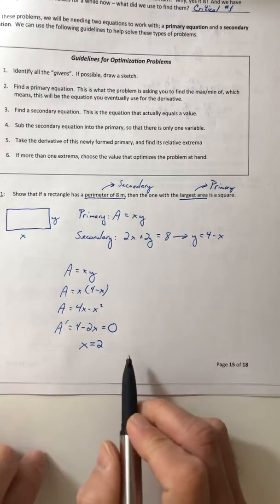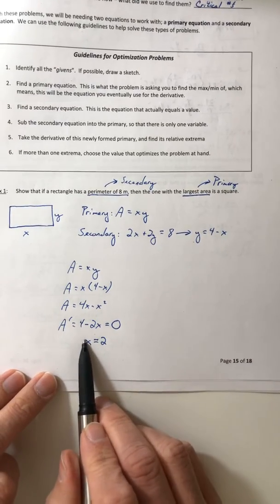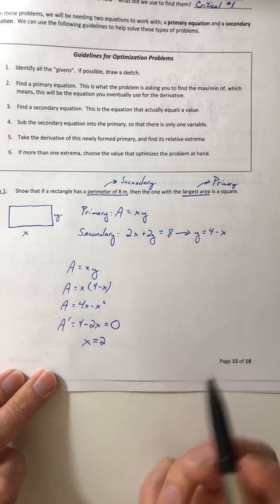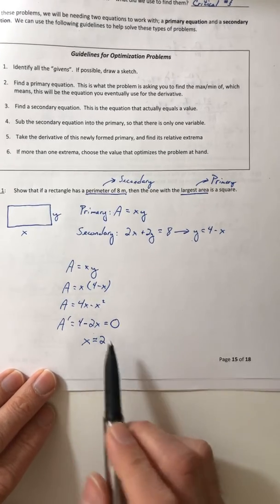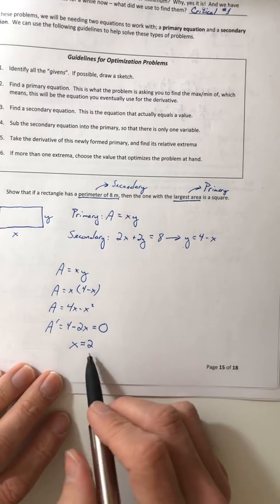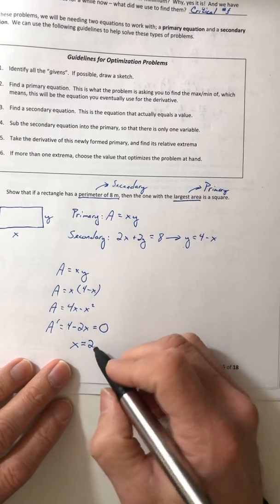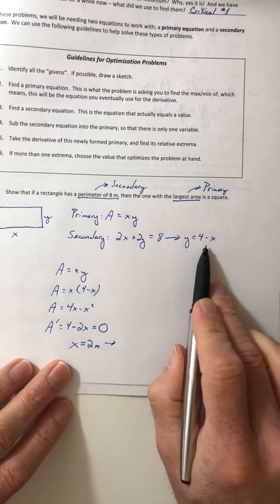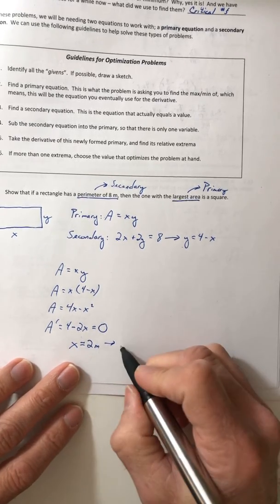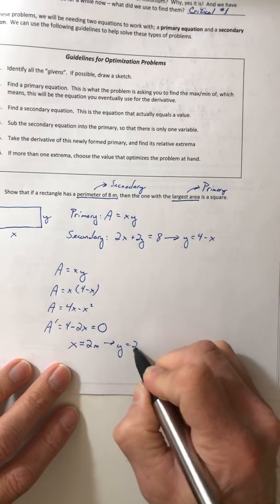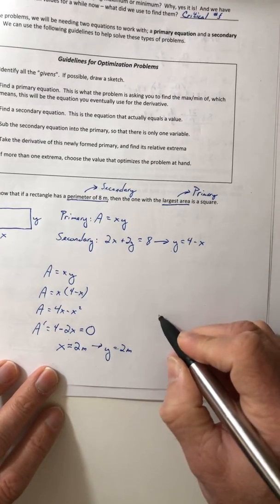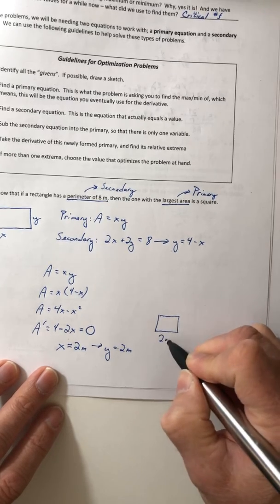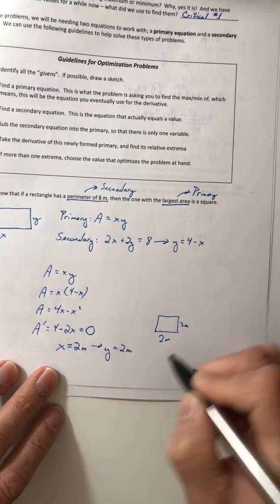That's our only extrema, our only critical number to give us an extrema, so that's probably going to be your answer. If x = 2 meters, then if I go back up here and plug that number in for x, y is also 2 meters. So you just showed you have a 2 meter by 2 meter square.